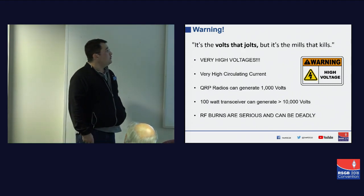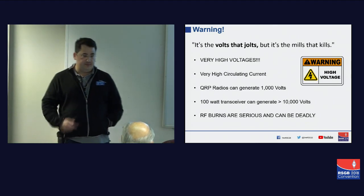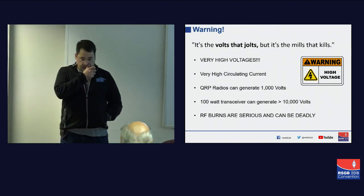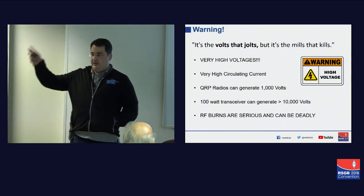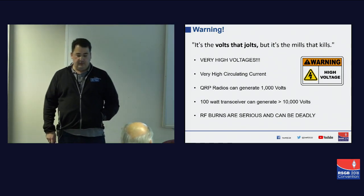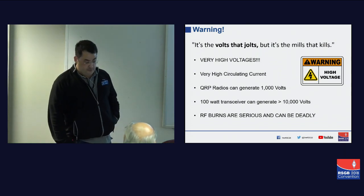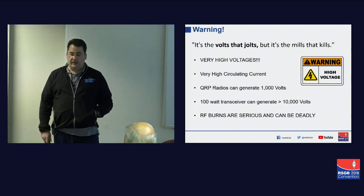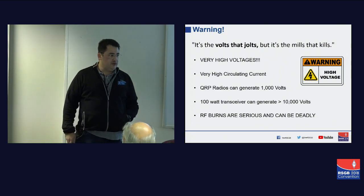It would be remiss of me not to put the warning out — the volts that jolt and the mills that kills. High current, high voltages circulating: you definitely want these loops out of reach of little hands, interested neighbors, and visitors to your garden when operating. Just to put it into perspective: if you're using a 100-watt transceiver you could be generating over 10,000 volts across the capacitor and anything up to 70 amps of circulating current.